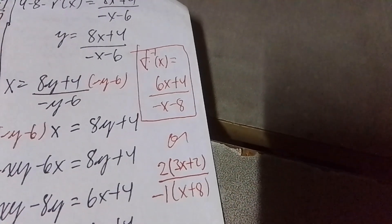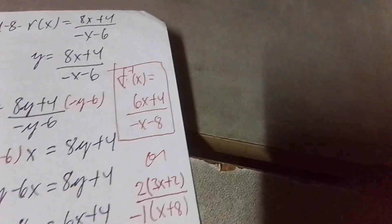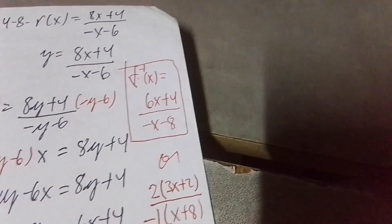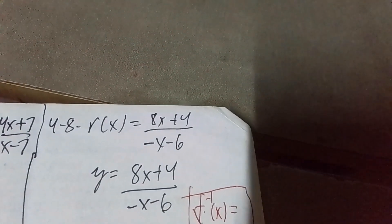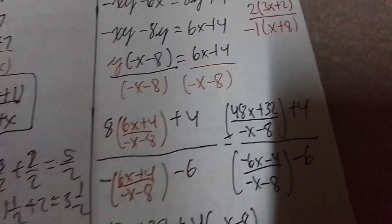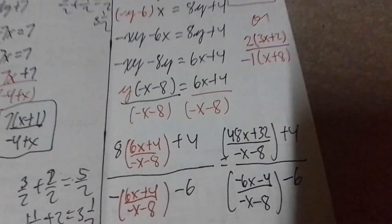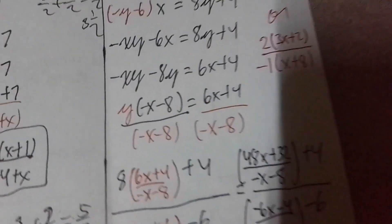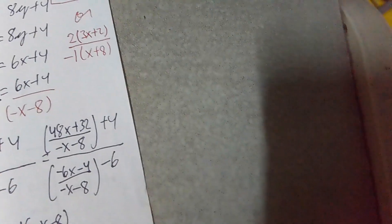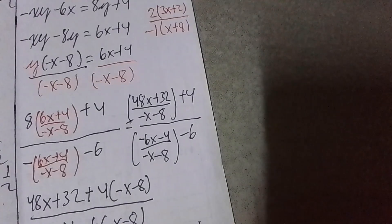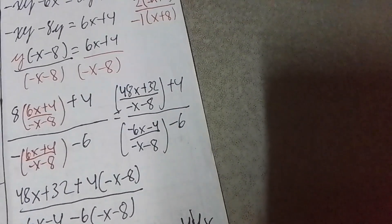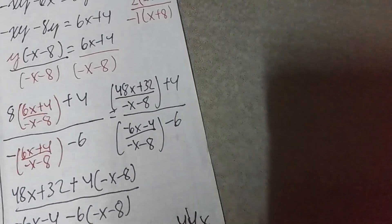x times negative y is negative xy; negative 6 times x is negative 6x. Bring the y to the other side: negative xy minus 8y is equivalent to 6x plus 4. Leave all the x's on one side and all the y's on the other. Since we have brought all the y's to one side, our next step is to factor out the y — so that you can get the individual y. So: y times negative x gives you negative xy, and y times negative 8 gives you negative 8y. It's equivalent to 6x plus 4.